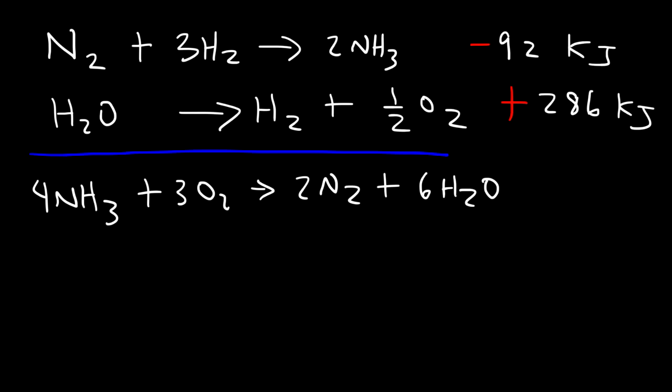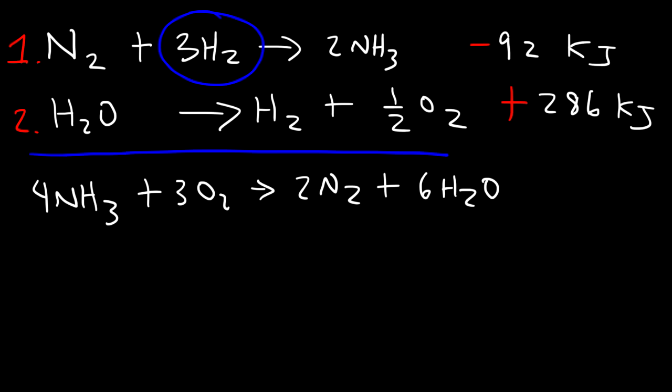We need to focus on the right species. In reactions 1 and 2, focus on reactants and products that appear only once across the two reactions. For example, nitrogen gas is only found in equation 1, not in equation 2, so we want to focus on N₂. Hydrogen gas is found in both equations, so we do not want to focus on H₂ — doing so will make things much harder.